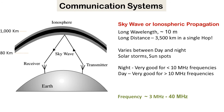Sky waves, or ionospheric waves, use the ionosphere for wave transmission. The ionosphere is located about 80 kilometers above Earth's surface and extends up to 1,000 kilometers. It reflects waves transmitted by the transmitter to the receiver, typically in the frequency range of 3 megahertz to 40 megahertz. Waves above 40 megahertz penetrate through the ionosphere and go into space.